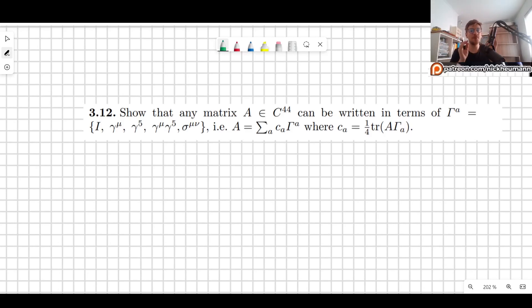Welcome! In this video I will help you show that any matrix A, which is 4 by 4, can be written in terms of the gamma matrices that we have seen before, the Dirac gamma matrices, the 16 gamma matrices.